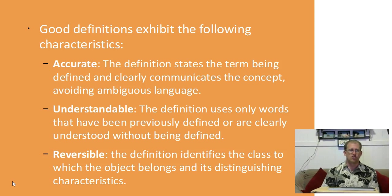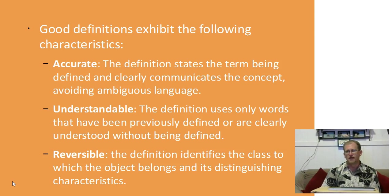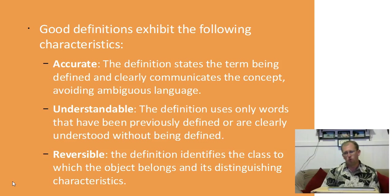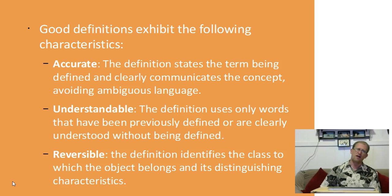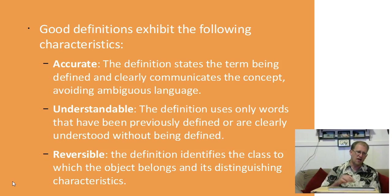A good definition is accurate — it actually does its job. It states the term being defined and clearly communicates the concept, avoiding ambiguous language. For example, if you define a cat as an endothermic, hair-bearing quadruped that is nocturnal and carnivorous, and the reader hasn't taken biology, they won't understand. Make sure you use words the reader can understand — only words that have been previously defined or are clearly understood. So if we're talking about a surface and I haven't defined 'point' or 'set' yet, I shouldn't use those words.